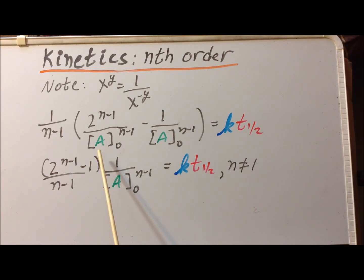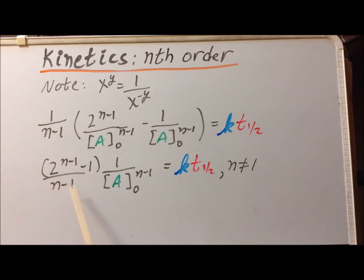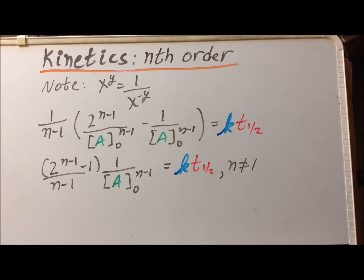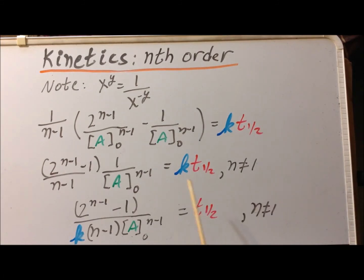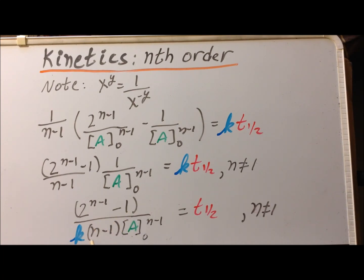I notice that I have a common denominator of A sub 0 to the n minus 1. So I can write this as one fraction and then pull the factor of 2 to the n minus 1 minus 1 in front over n minus 1, and then what was formerly inside here is now 1 over A sub 0 to the n minus 1 power. We have one remaining step, and that is to divide each side of the equation by the rate constant k to give us an expression for the half-life time. So we get that the half-life time is going to be the quantity 2 to the n minus 1 minus 1 divided by k times the quantity n minus 1 times the initial concentration of A to the n minus 1 power, so long as n is not equal to 1.